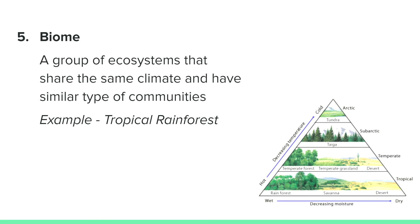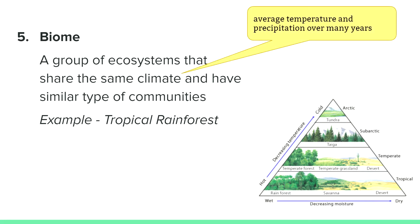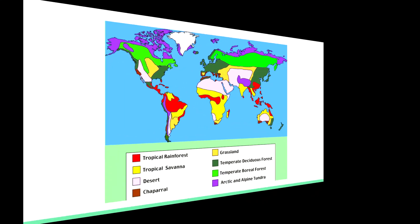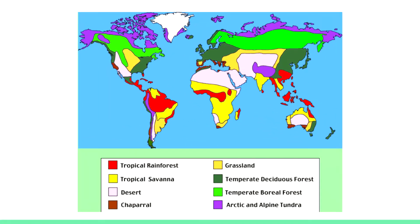A bunch of ecosystems with the same climate and similar communities is called a biome. Climate is just the average temperature and precipitation over many years. An example of a biome is the tropical rainforest, where a wide variety of wildlife called biodiversity can be found.